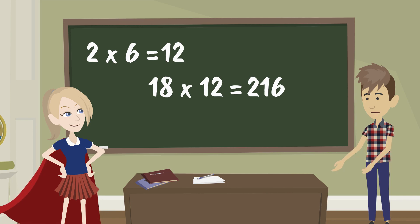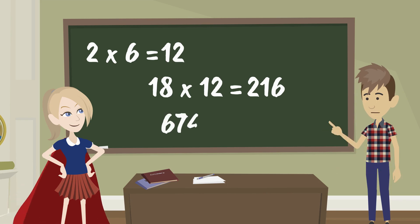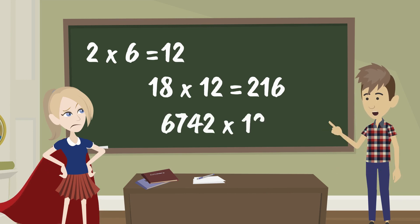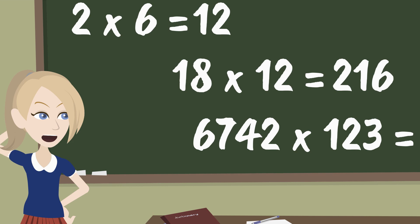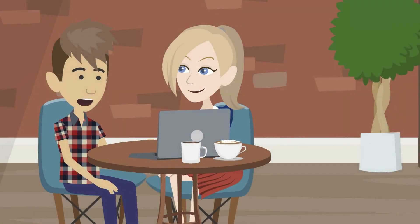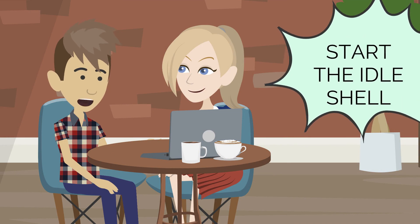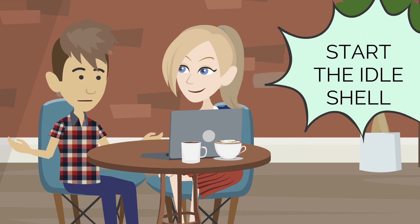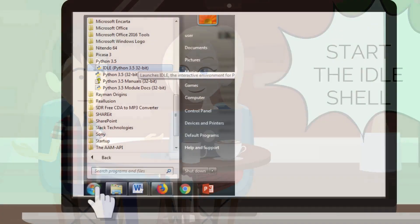What is 6,742 times 123? I don't think I'm that good in math. Can Python help me with that? That's what I was just getting at. Come on and start the IDLE shell, as I'd shown you before.